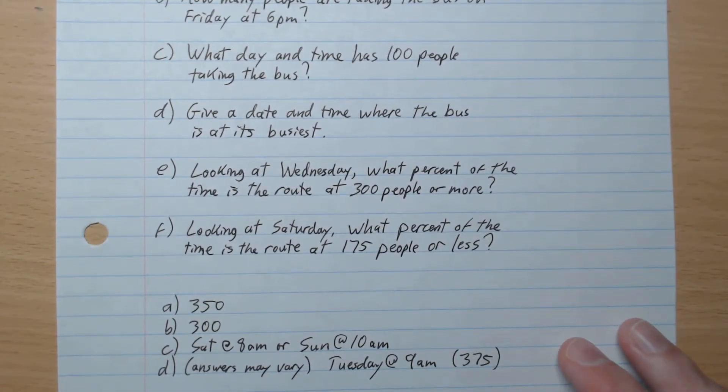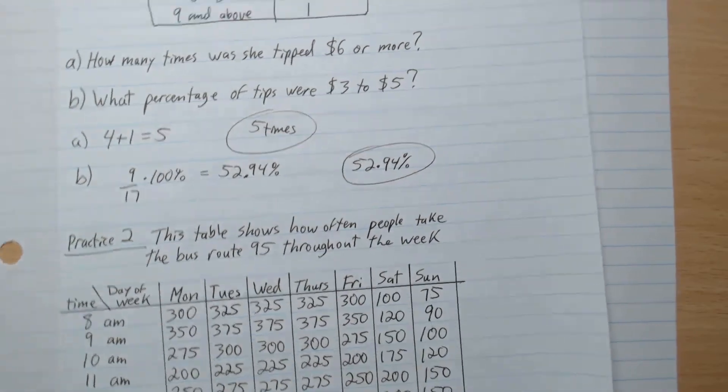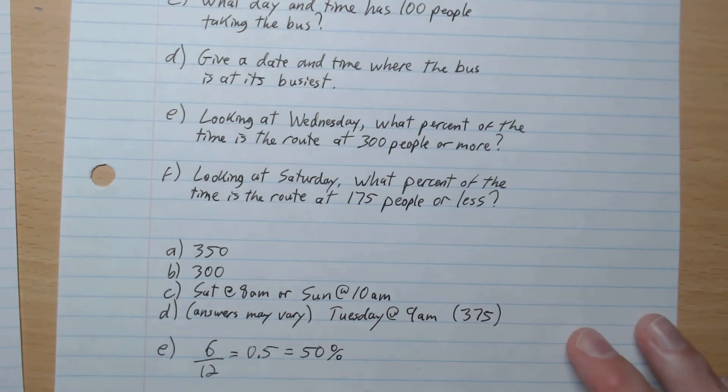D, give a date and time where the bus is at its busiest. So when we look all over here, we see that 375 is the highest time. So as long as you give a date and time that has 375, that's correct. So for example, Tuesday at 9am, that's one example.